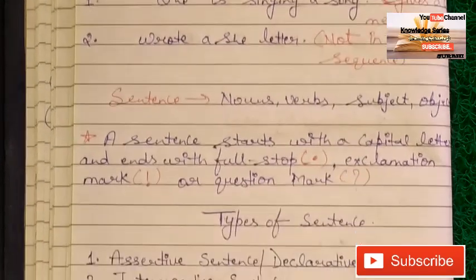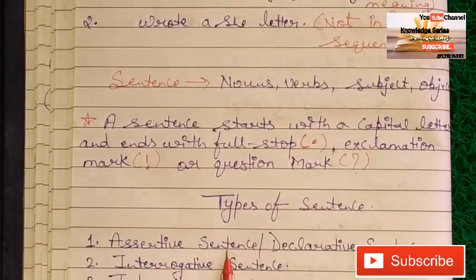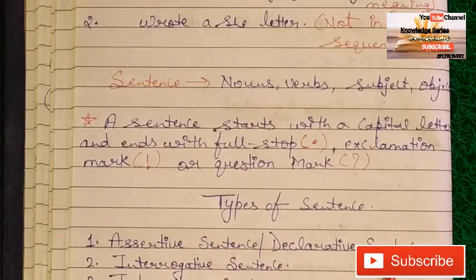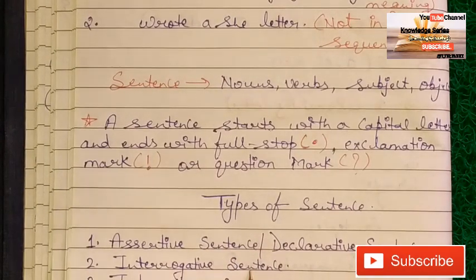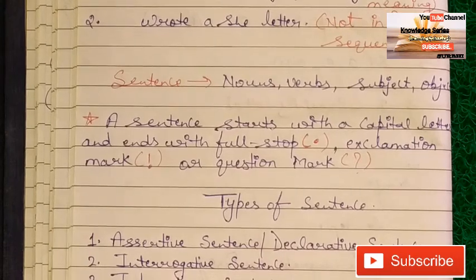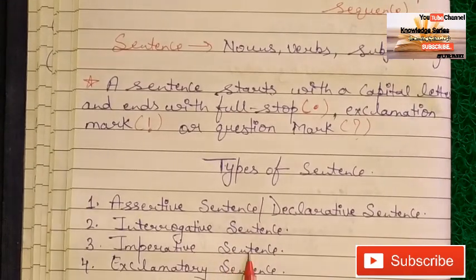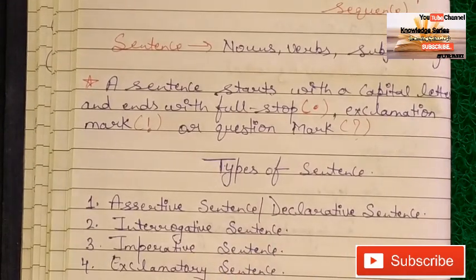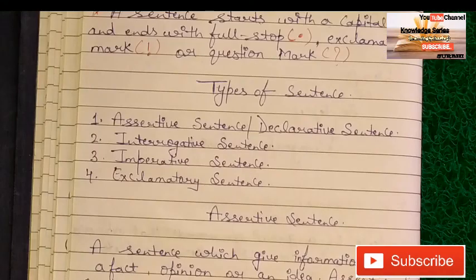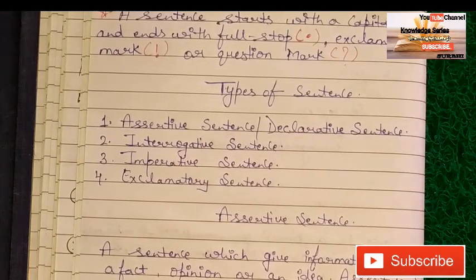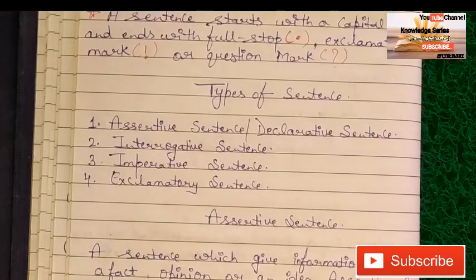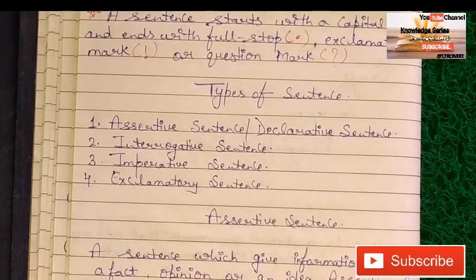Number one is the assertive sentence, also called a declarative sentence. Next is the interrogative sentence. Number three is the imperative sentence. And number four is the exclamatory sentence. Let's talk about each one by one. Number one is the assertive sentence — a sentence which gives information, states a fact, opinion, or an idea.